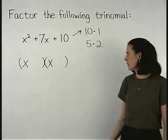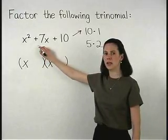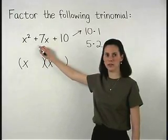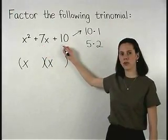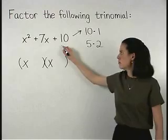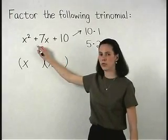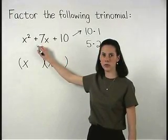Well, take a look back at the middle term in our original trinomial. The rule is, the factors of the constant term that we use must add together to equal the coefficient of our middle term.